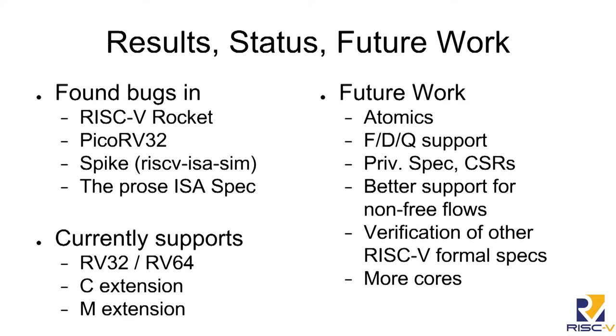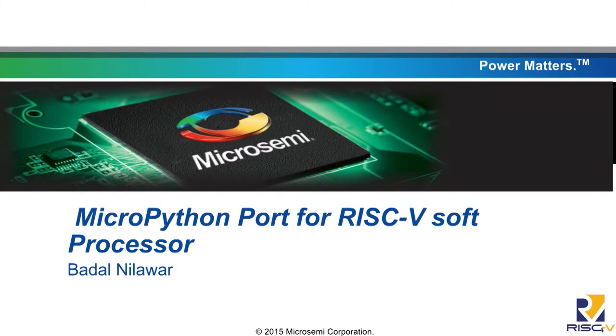I have found bugs with that in everything I looked at. I found bugs with Rocket, and I found bugs with RISC-V, which is not on this list yet. It currently supports RV32 and RV64, the C extension and the M extension. If this interests you, find me at my poster.